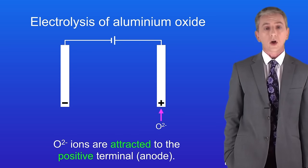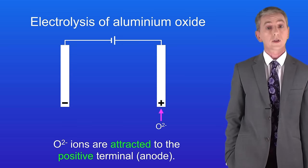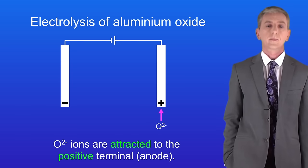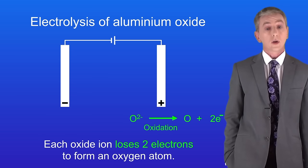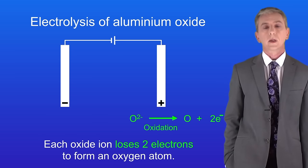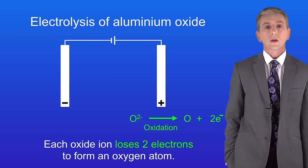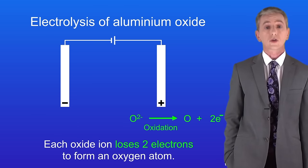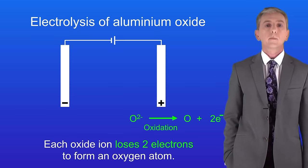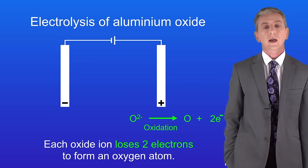The oxide ions O2- are attracted to the positive terminal in other words the anode. Each oxide ion loses two electrons to form an oxygen atom. Again if you're a higher student you need to memorize the half equation which I'm showing you here. Because the oxide ions are losing electrons that's an example of an oxidation reaction.